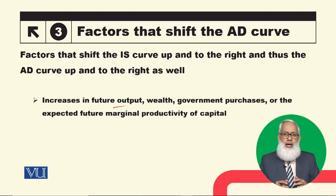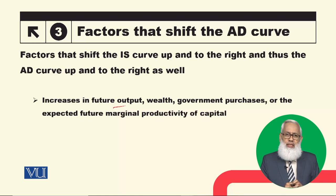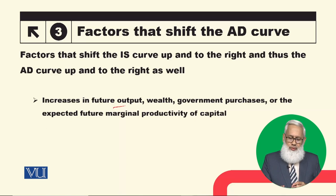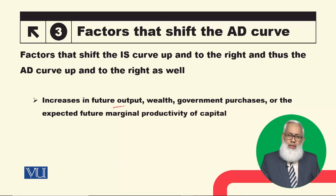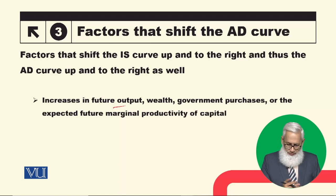IS curve के rightward shift करने की क्या وجوہات हो सकती हैं? An increase in future output — जब लोग future के बारे में optimist हो जाते हैं, future output बढ़ने की उम्मीद होती है, future में resources ज्यादा होंगे, तو अपनी current consumption increase कर देते हैं. Consumption increase होने से aggregate demand increase होगी. Wealth — अगर किसी की lottery निकल आए या inheritance मिले तो वह उसी income पर ज्यादा खर्च करेगा, consumption बढ़ेगी और aggregate demand بढ़ेगी. IS curve shift कर जाएगा.